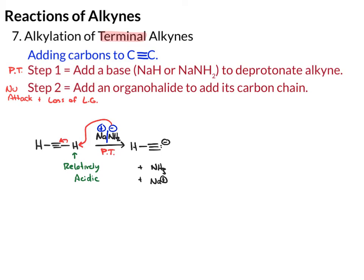So now we're ready for step two, where we add an organohalide to add its carbon chain. Let's say I want to add a three-carbon chain. I'll add three carbons attached to some halogen — Cl, Br, or I — so I'll just use Br. It will help you to number starting at the electrophilic carbon — that's number one — and I'm going to highlight it so we can keep track of carbon one. Here is our nucleophilic attack and loss of leaving group: the lone pair on the alkyne will attack this carbon and you'll lose the bromide as a leaving group.